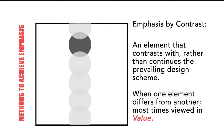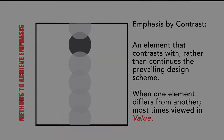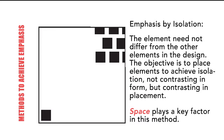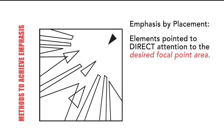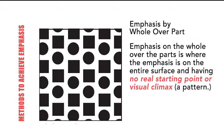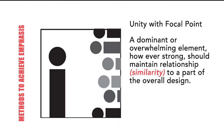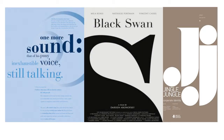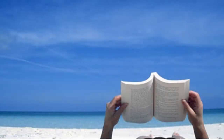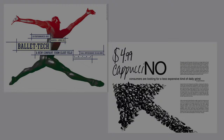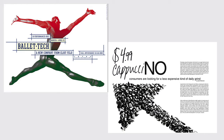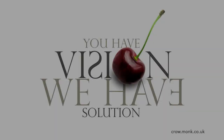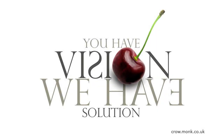There are five methods you can use to achieve emphasis: contrast, isolation, placement, movement, and unity with the focal point. I have created a handout and made it available in the reading portion of the project that will elaborate more on each emphasis. The thing you want to remember when using emphasis is that you can combine them with each other, and you can also combine and mix with any of the elements of design.